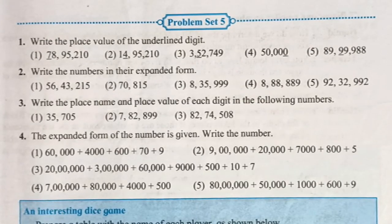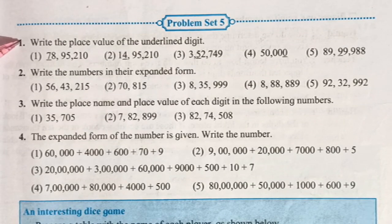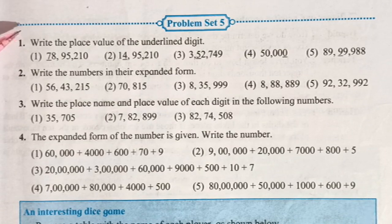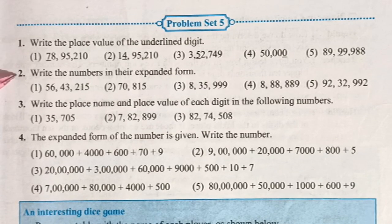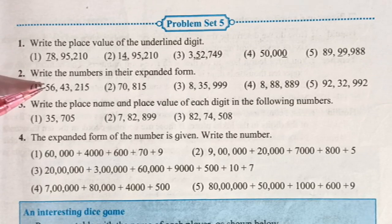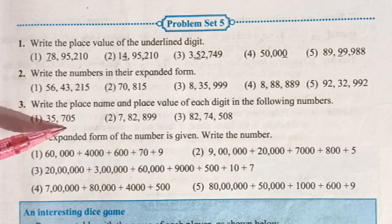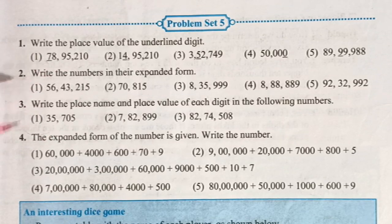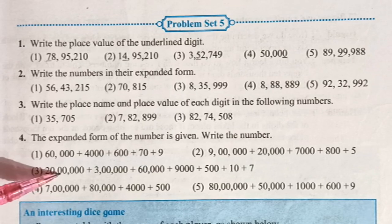In problem set number 5, question number 1 is: write the place value of the underlined digits. They have given numbers with some digits underlined, and you are supposed to write only the place value. Question 2 is: write the numbers in the expanded form. Question 3 is: write the place name and place value of each digit. Question 4 is: the expanded form is given — write the number in standard form.